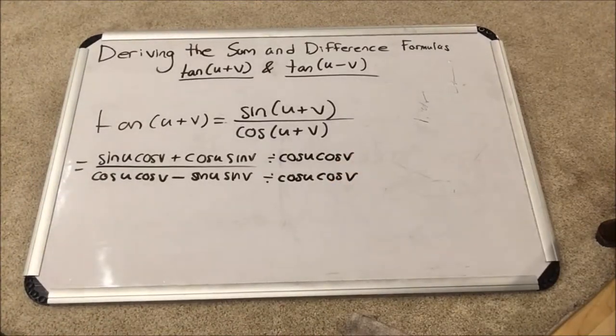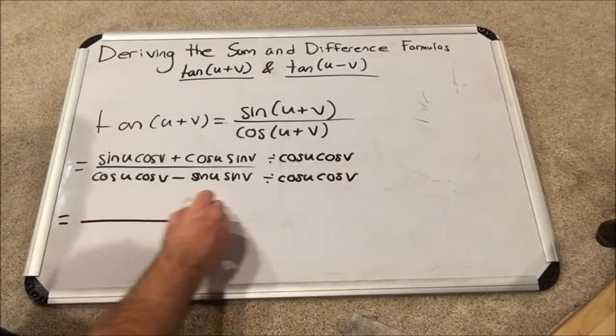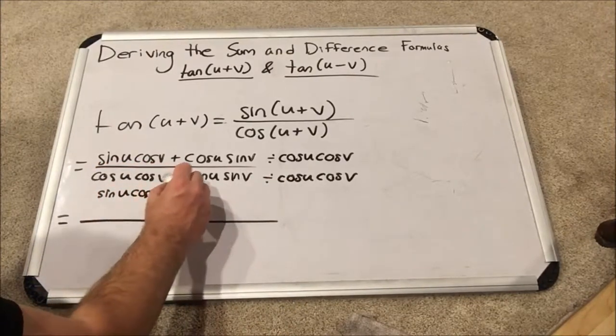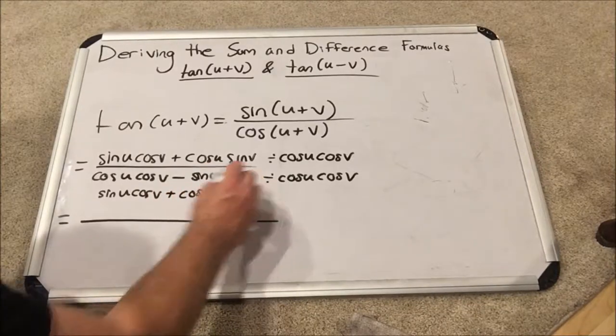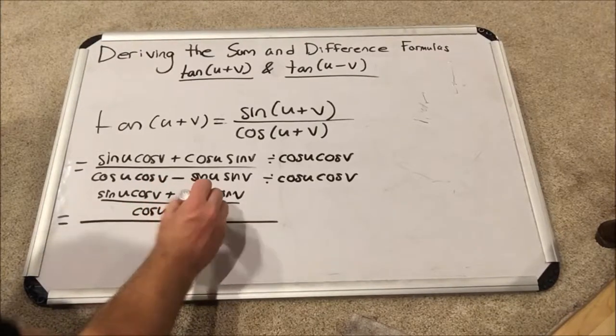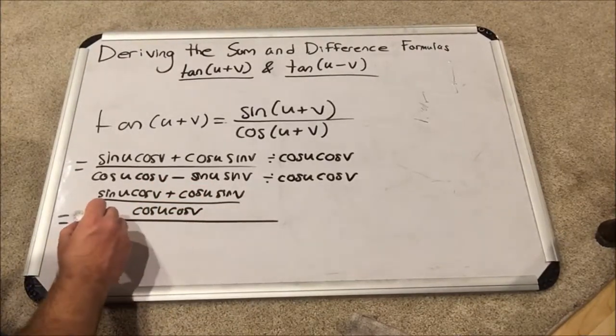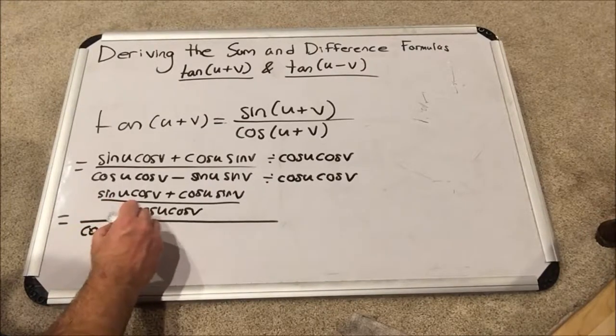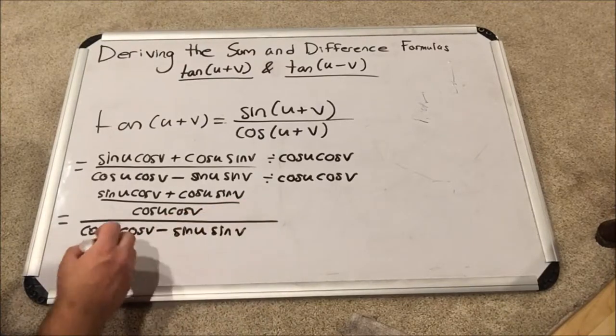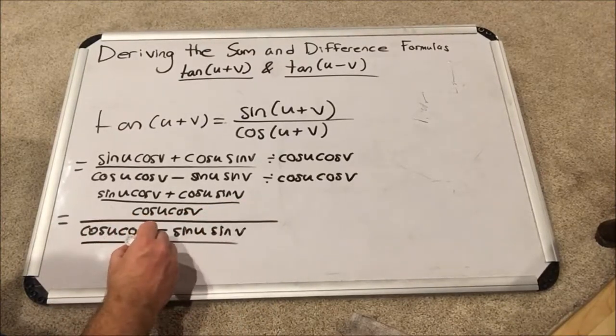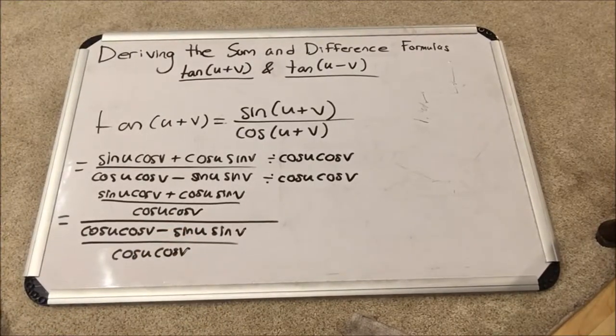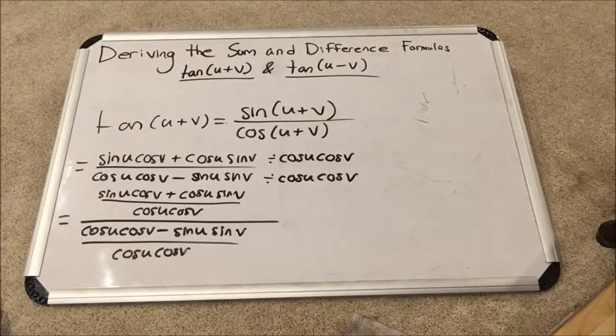So what does that look like? Well, it looks ugly, but we're going to write it anyway. Sine u cosine v plus cosine u sine v all over cosine u cosine v. Now, the denominator is cosine u cosine v minus sine u sine v all over cosine u cosine v. Oh my gosh, this is getting out of hand. But not to worry. It's going to start simplifying right now.